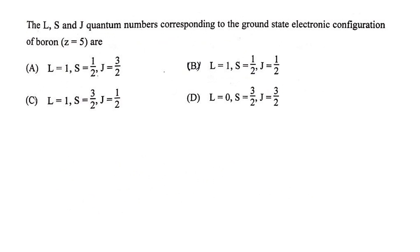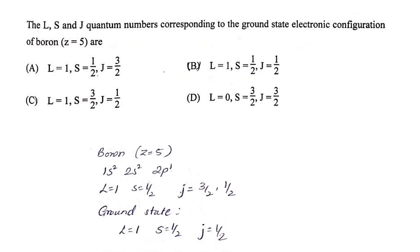The L, S, and J quantum numbers for the ground state of boron (Z=5): the electronic configuration is 1s²2s²2p¹. The outermost electron is in 2p¹, so L = 1, S = 1/2, and J ranges from L+S = 3/2 to L−S = 1/2. The ground state has L = 1, S = 1/2, J = 1/2.